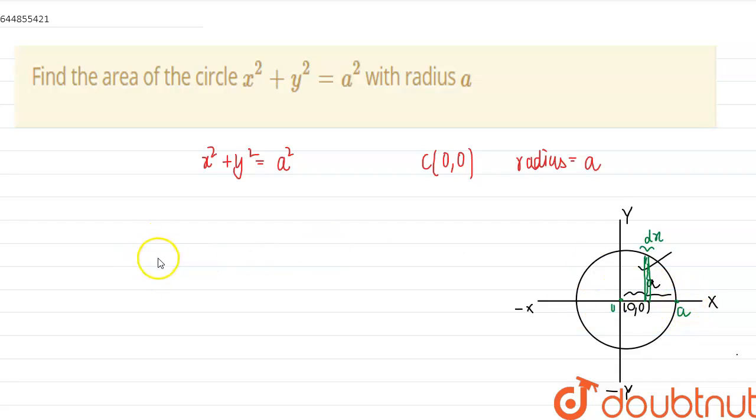This can be written as, first we write this in terms of y. So y is equal to √(a² - x²). And now integrating this strip from 0 to a.